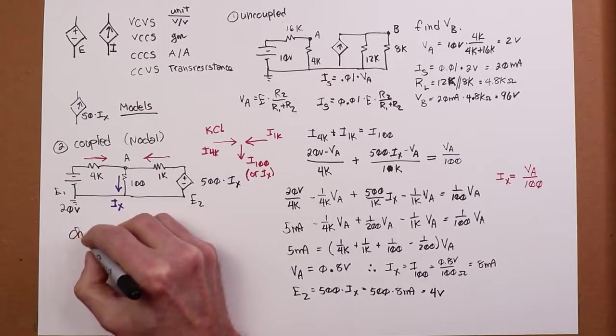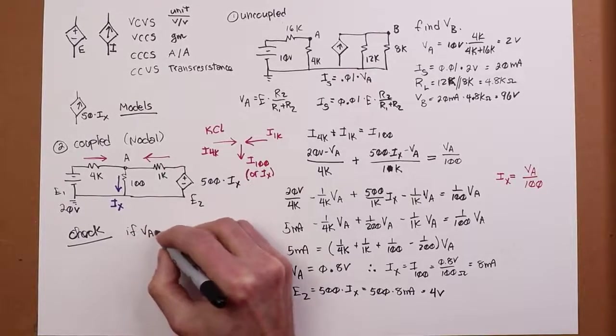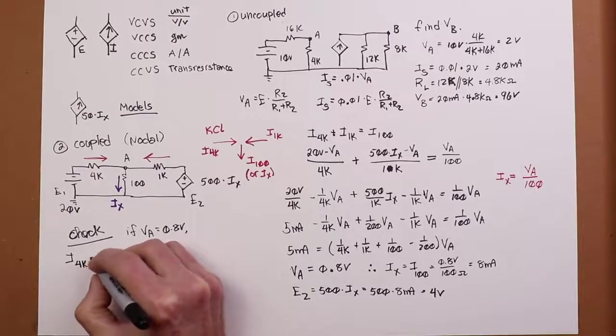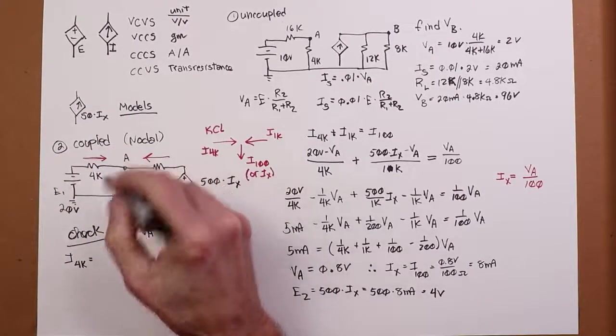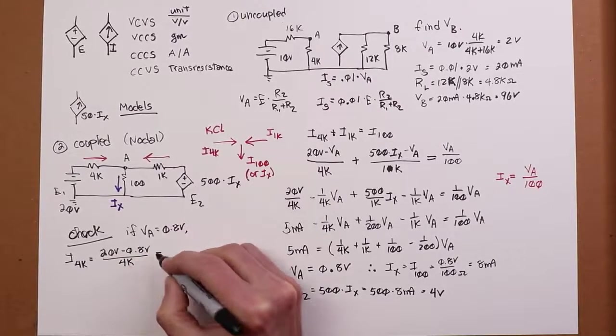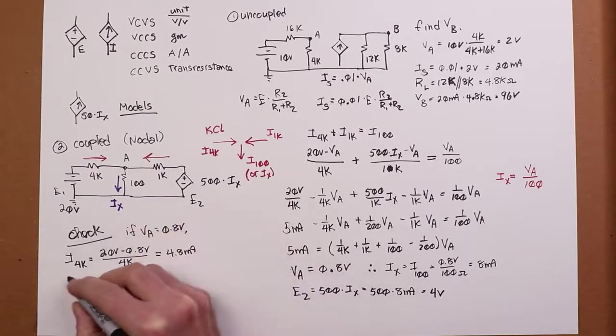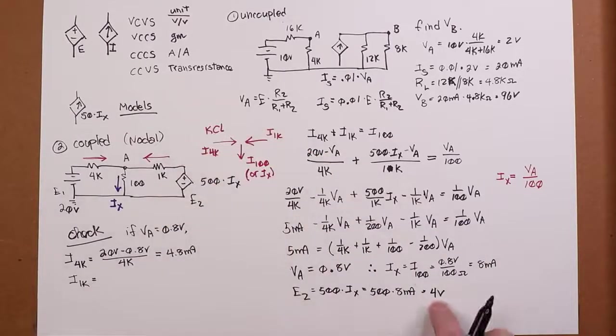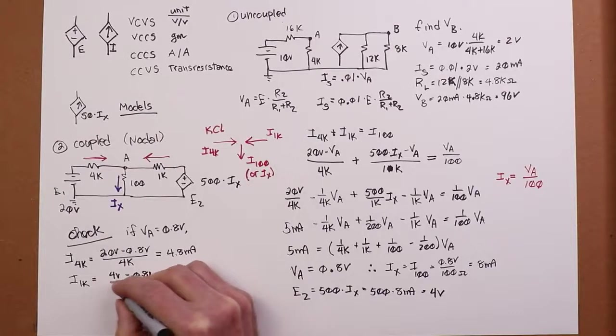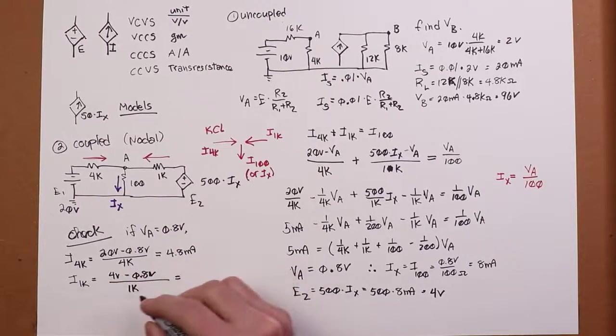All right. Now, let's go check this. Cross check. If VA is 0.8 volts, then I through the 4k would have to be 20 volts on one side and 0.8 volts on the other, divided by that 4k. Basic Ohm's law relation here. That works out to 4.8 milliamps. Meanwhile, the current through the 1k would be the E2 potential, which we said is 4 volts, minus the VA of 0.8. And that, of course, is dropping across the 1k. So you got 3.2 volts sitting over 1k. That gives you 3.2 mils.